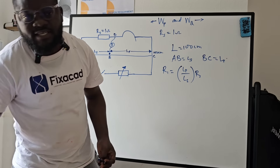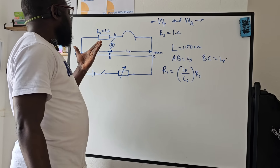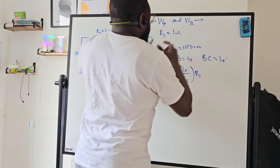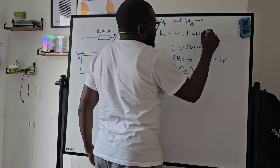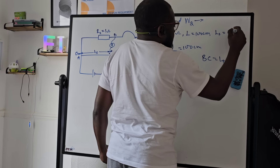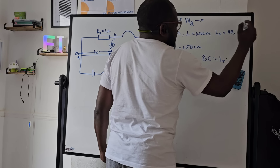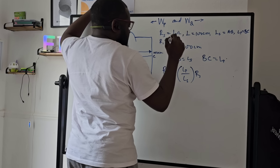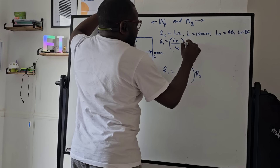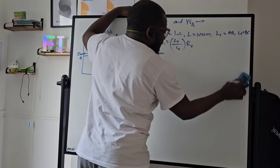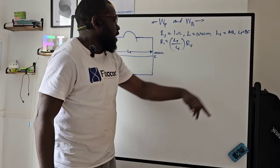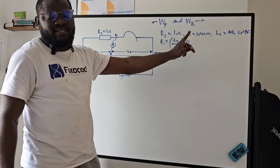That's the first part of the experiment. We're starting with L equal to 100 centimeters, measuring Ls (which equals AB) and Lp (which equals BC). We also need R1, which equals Lp divided by Ls multiplied by Rs. Wire P is going to be constantan wire, and wire Q is going to be copper wire. Take note of that.